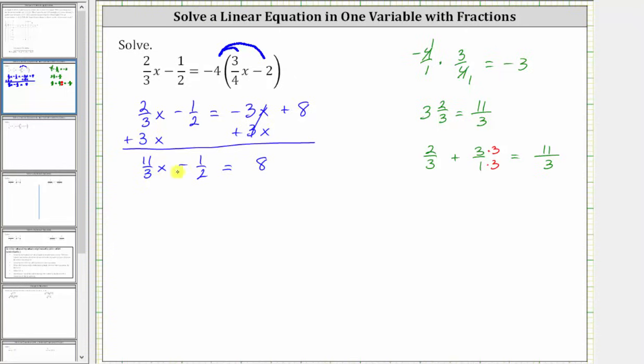And now, to isolate the variable term, we have to undo the subtraction by adding 1½ to both sides. Simplifying, we have 11/3x, negative 1½ plus 1½ is zero, so we have 11/3x equals 8 plus 1½ is 8½.